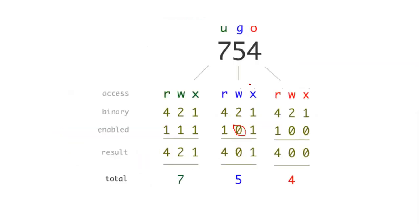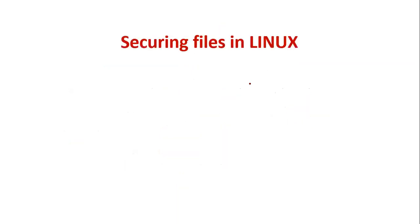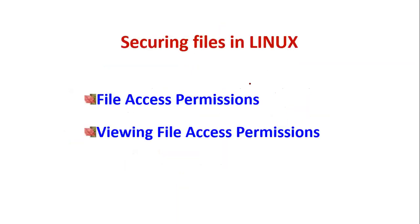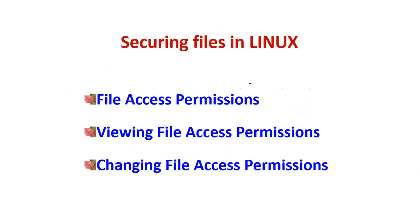So I hope you all understand what umask value is and the different types of permissions in changing file access permissions — in absolute mode and symbolic mode. This chapter deals with securing files and file access permissions.